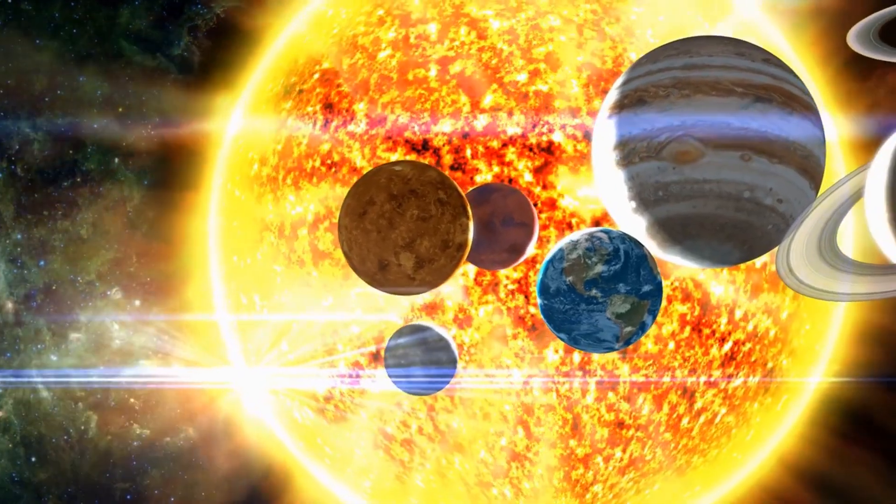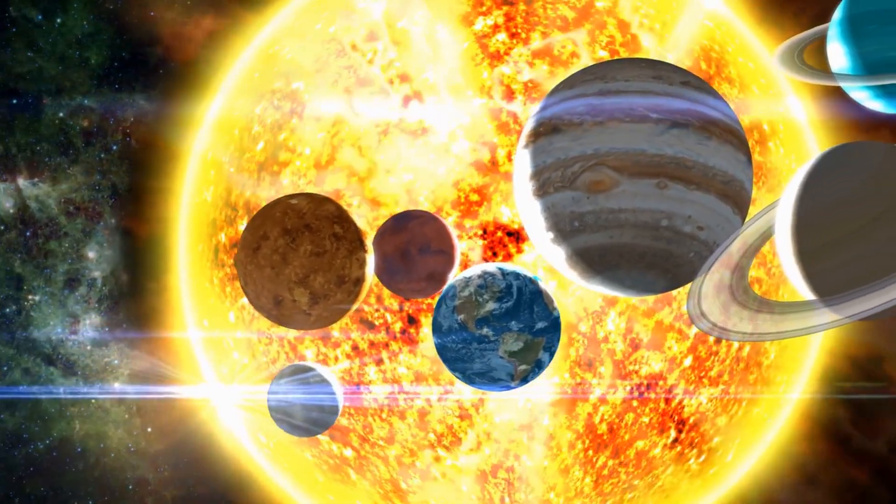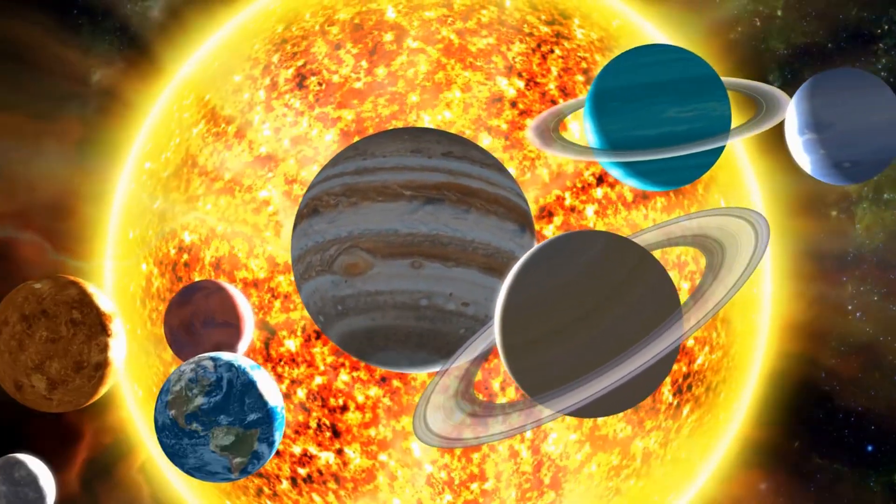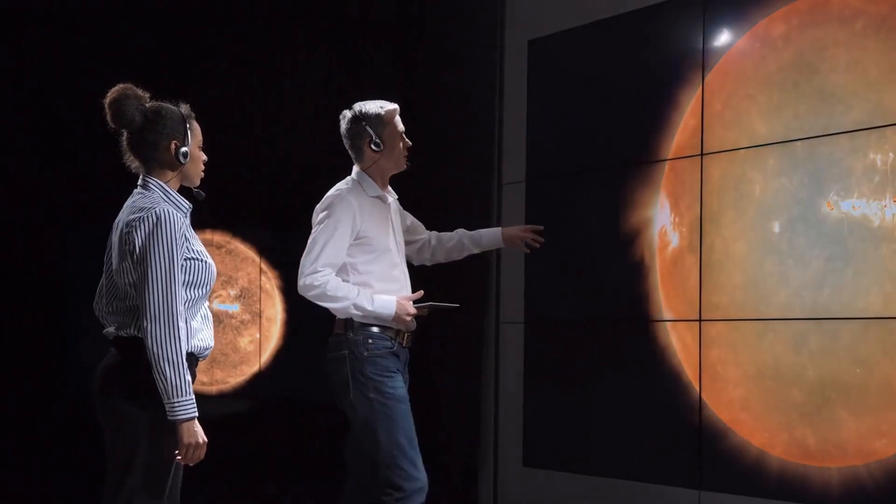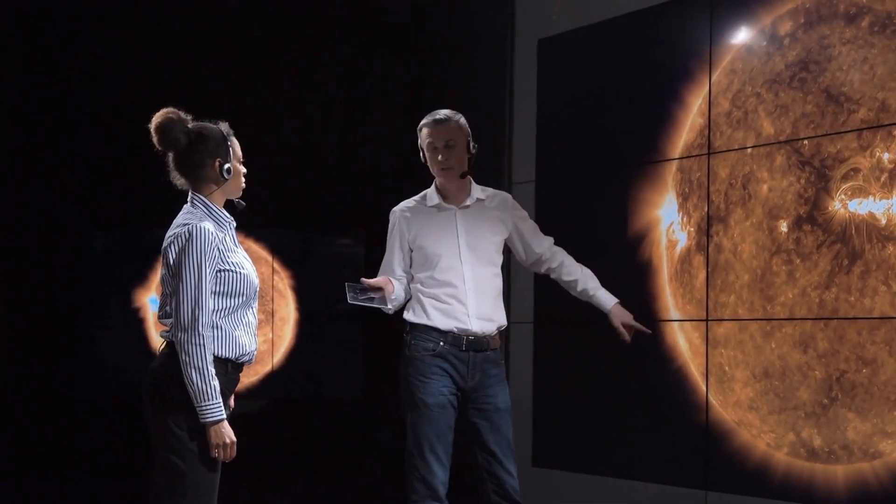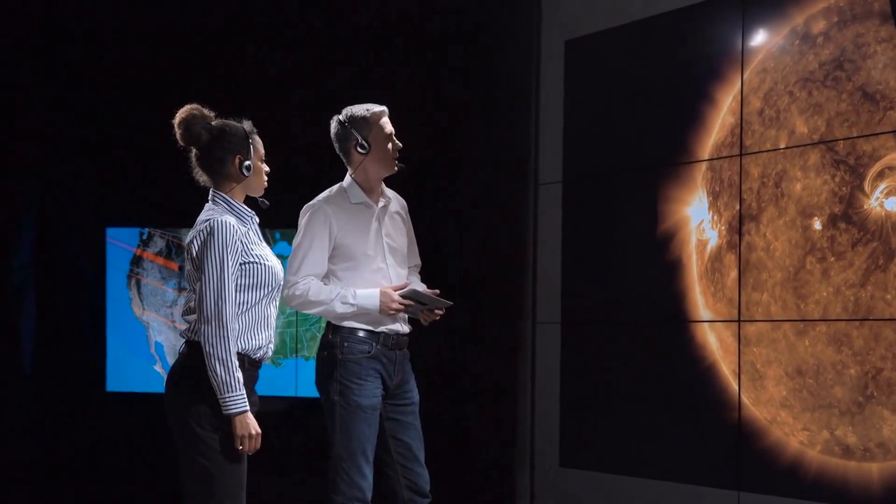Recently, the Sun has released a powerful X2.2 class solar flare, which is expected to cause a geomagnetic storm on Earth. Experts are warning that this event is particularly concerning as the Sun is currently at its most volatile due to reaching its solar cycle peak.